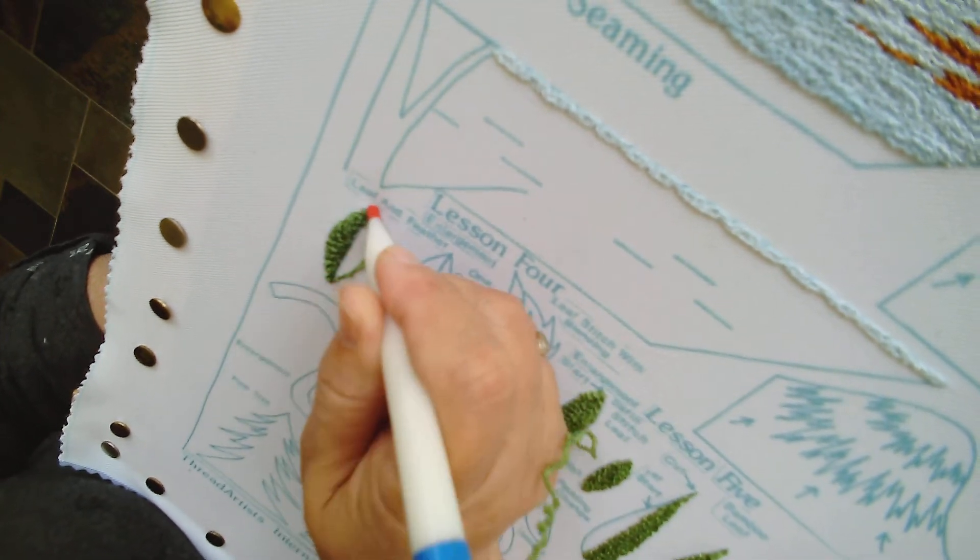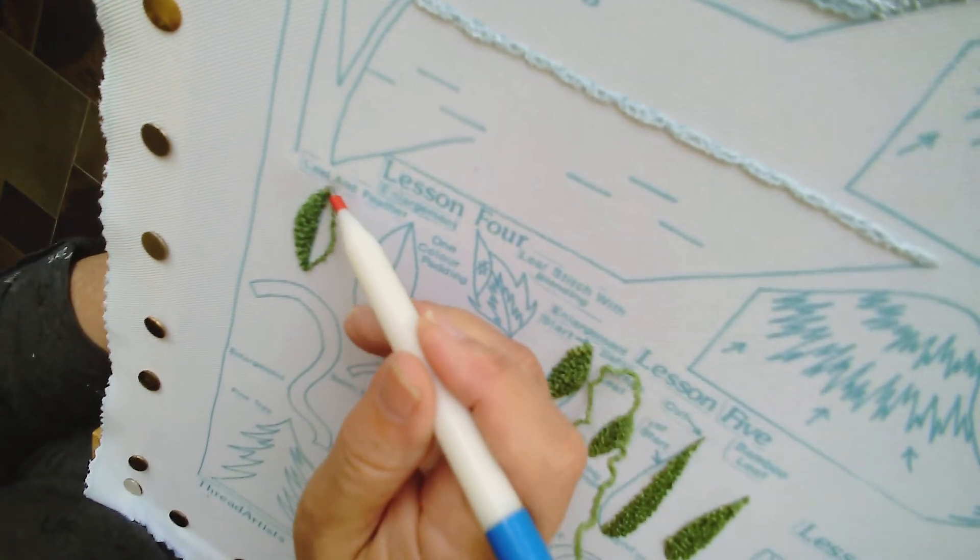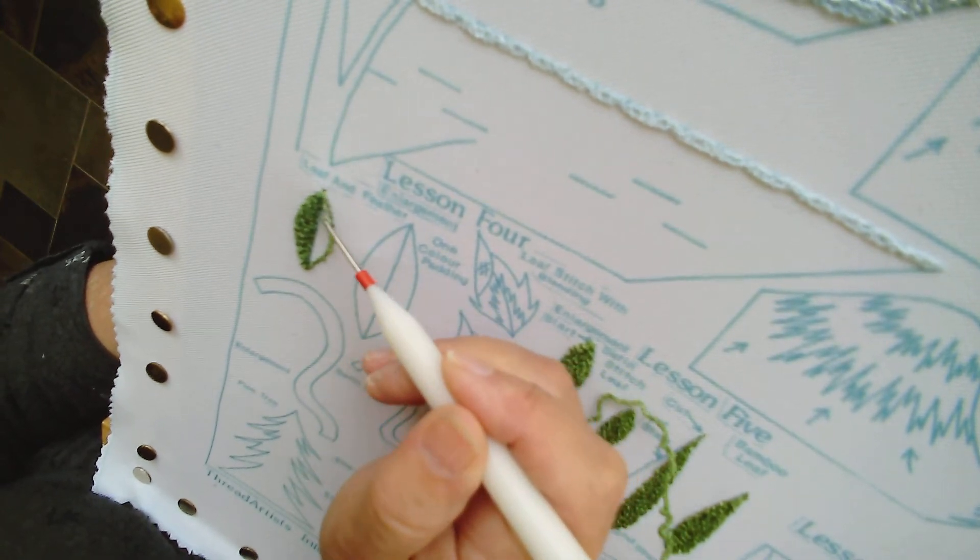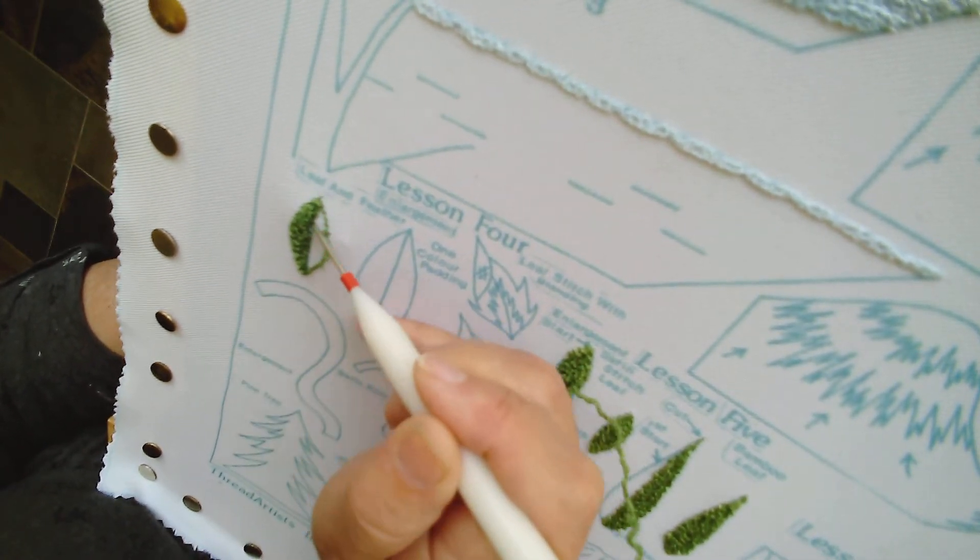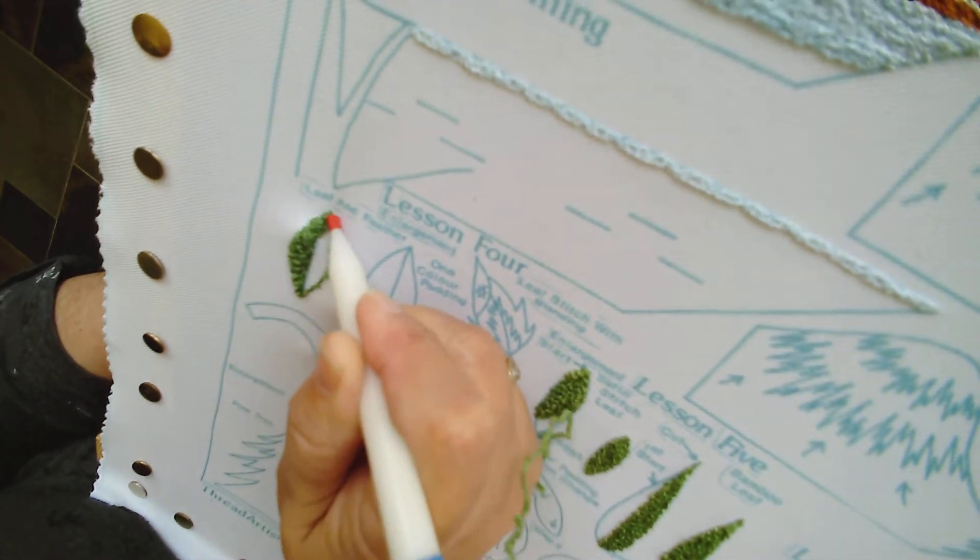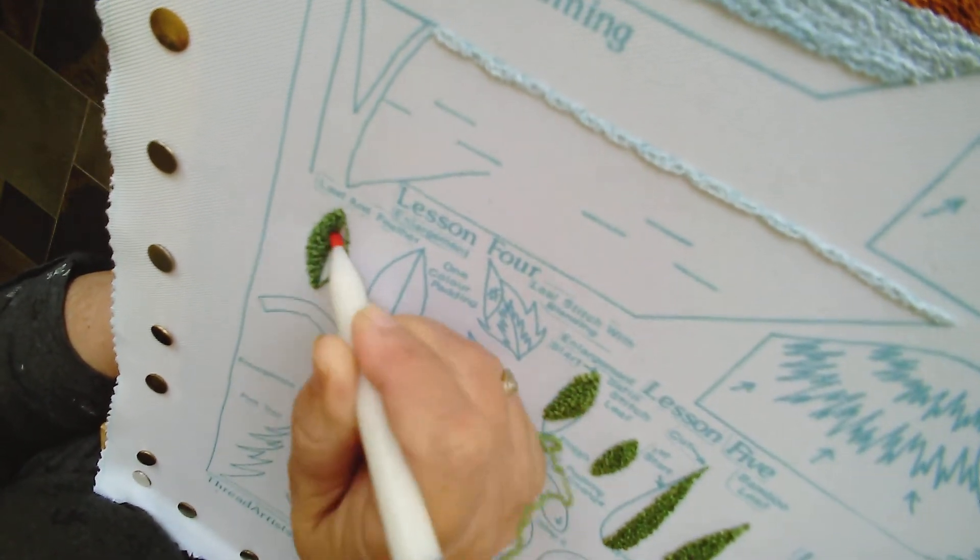So you stitch the end, go around, over the padding all the way, make yourself a nice pointy leaf, and then work your way down the opposite side.